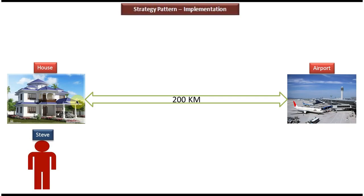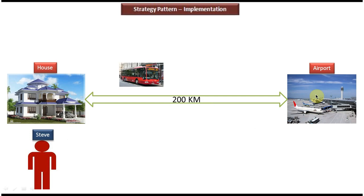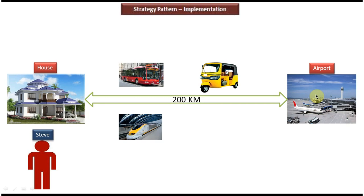Now we will see the scenario where we can use strategy design pattern. On the left side you can see a house where Steve is staying, and on the right side you can see an airport. From Steve's house to the airport the distance is 200 kilometers. Suppose Steve wants to go to the airport — he can use bus, auto, train, or taxi.